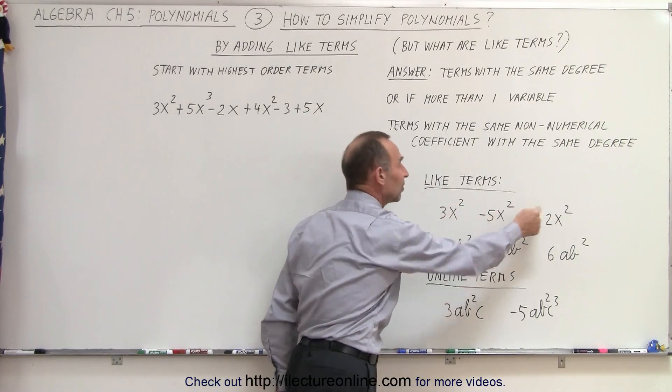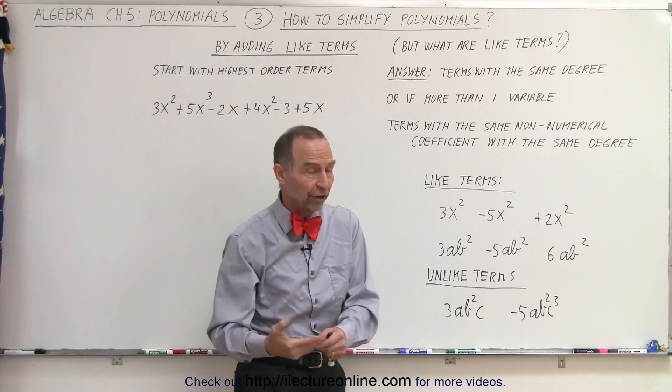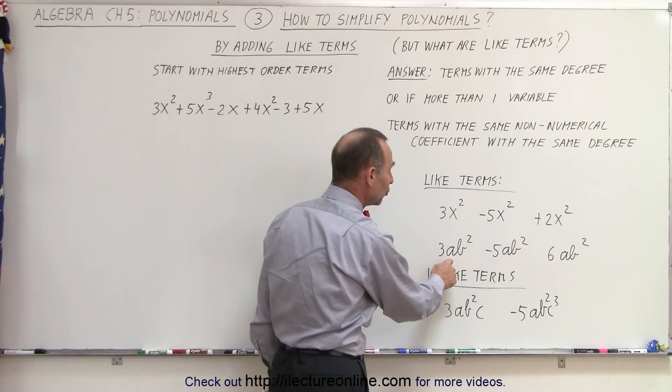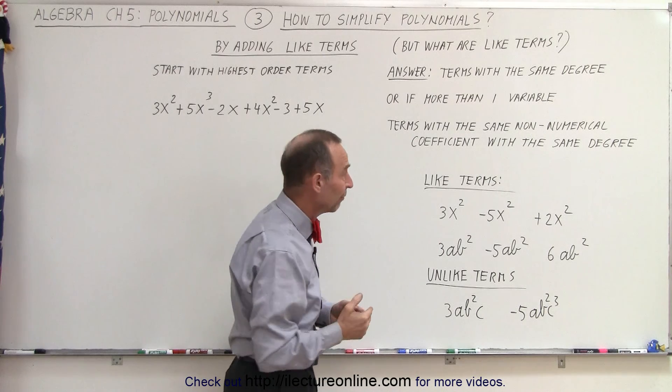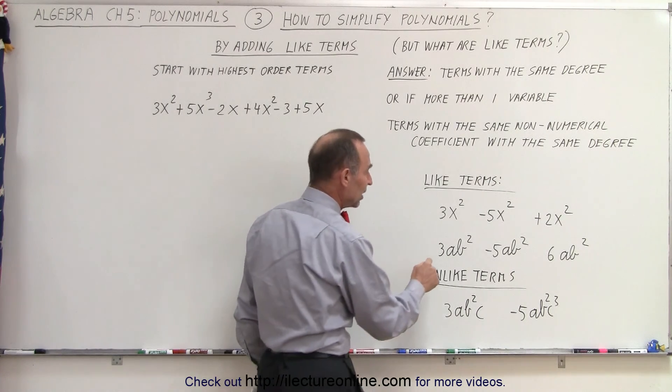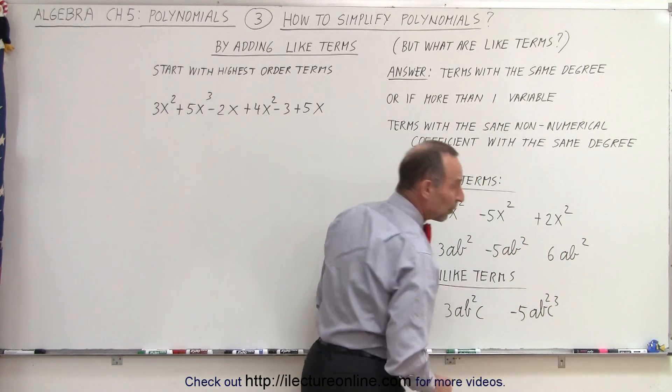Here we have an example where there's more than one variable. Both a and b are variables. They're what we call non-numerical coefficients. They're coefficients or factors that are multiplied together. And notice that in each case a is raised to the first power and b is raised to the second power.